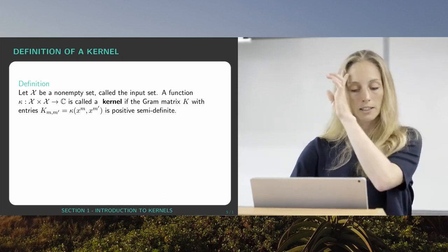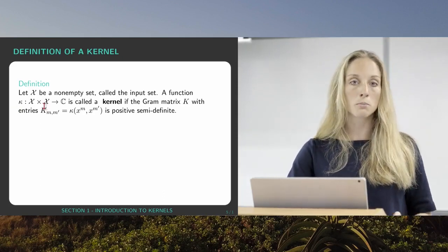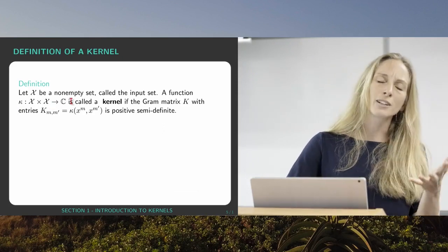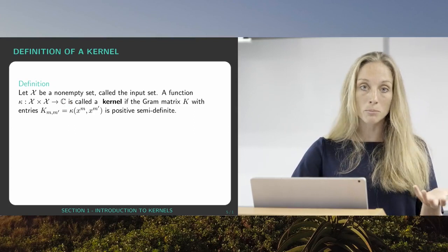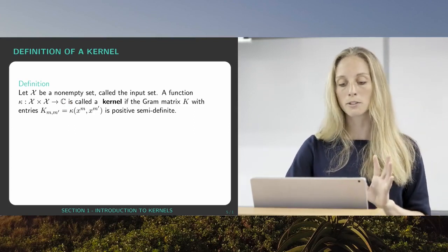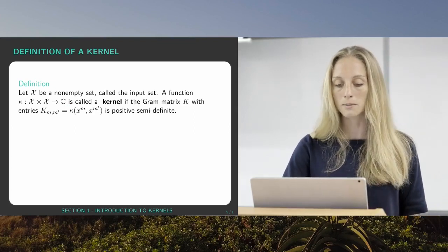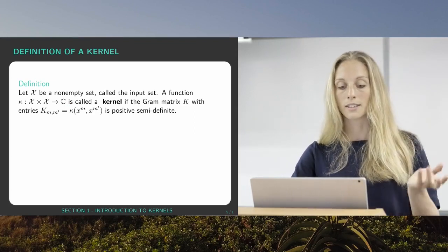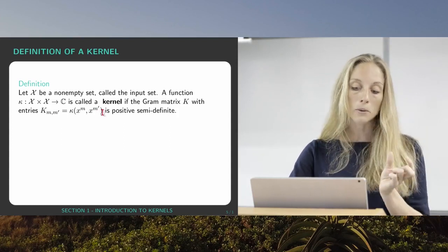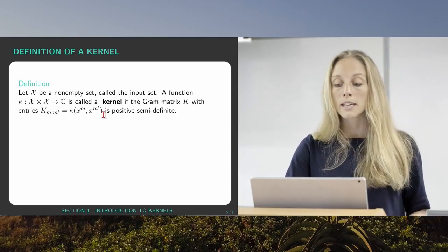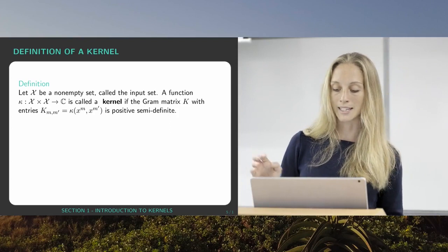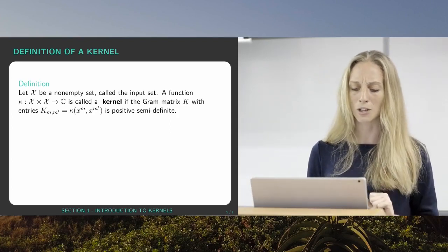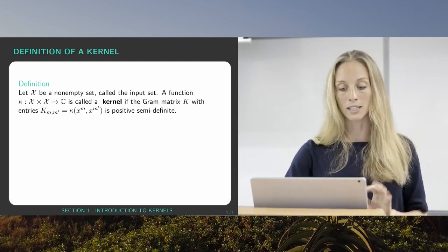So x is the input set. If we now have a function kappa that takes two of those inputs from the input set and maps it to a complex number. So we can define kernels that map into real numbers only, but let's for now use the more formal definition and map it to complex numbers. Such a function is called a kernel if the gram matrix with these entries which are the pairwise similarities of your data points is positive semi-definite. And since not everyone has to know what positive semi-definite matrices are, it's also a very abstract concept. Let me just put this on here as a slide.